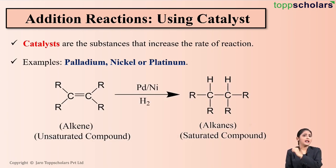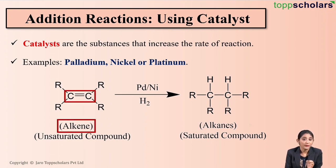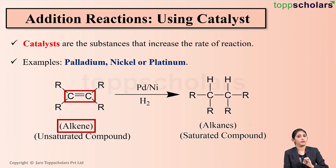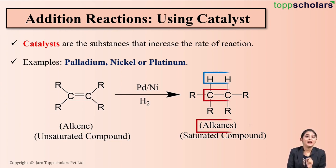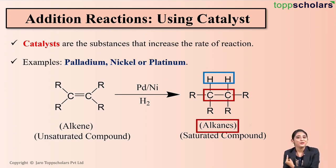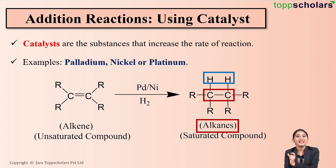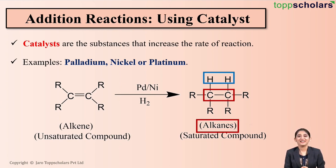Here I have an unsaturated compound which is an alkene — that is, a carbon-carbon double bond. We are going to add hydrogen to this alkene using a palladium or nickel catalyst. The hydrogen atoms get added across the double bond, as you can see here, so this double bond gets converted into a single bond. That is, the alkene gets converted into an alkane, which means the unsaturated compound gets converted into the saturated compound.